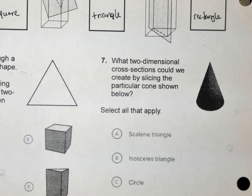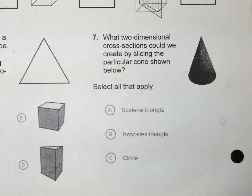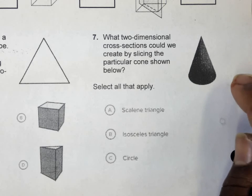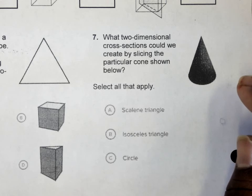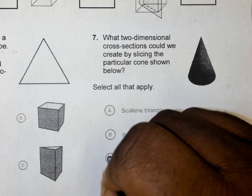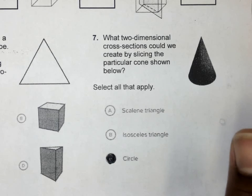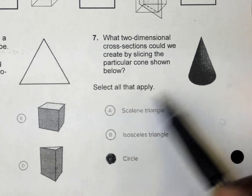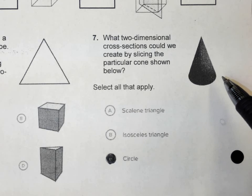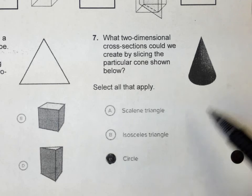Number seven says what two-dimensional cross-sections could we create by slicing the particular cone shown below? Select all that apply. Now on this one, they didn't tell us what direction they were slicing because they want you to consider everything and select all that apply. Jen, what you got? Let me help you out. If I slice this horizontally, what shape am I going to see? Circle, right? If I slice it vertically, what am I going to see?